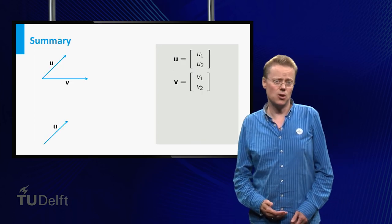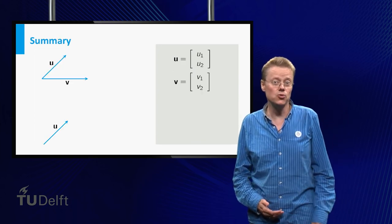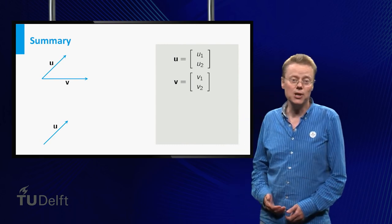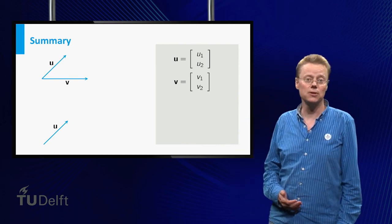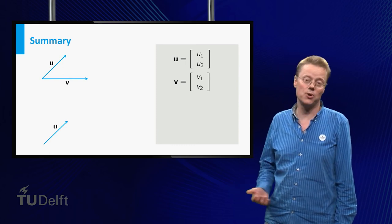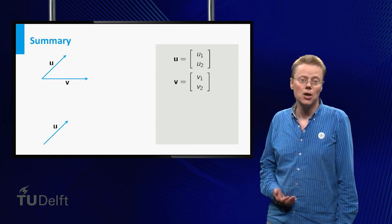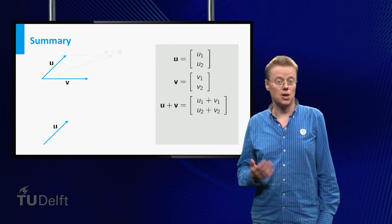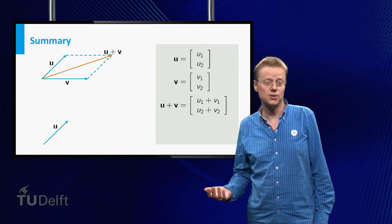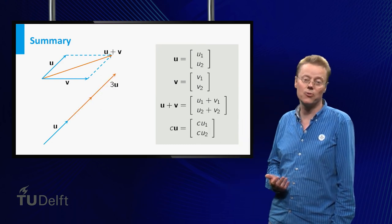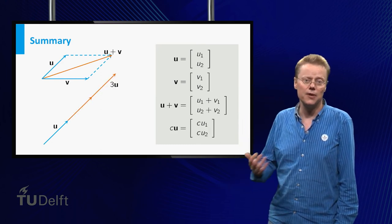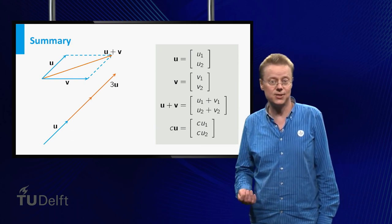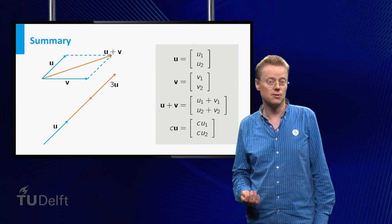In this video we defined vectors in two- and three-dimensional space, both geometrically by magnitude and direction, and algebraically by their components. You also learned how to apply the following operations: addition of two vectors and multiplication of a vector with a scalar. In the next video you will learn more about the length of a vector and distances between points. Stay tuned!